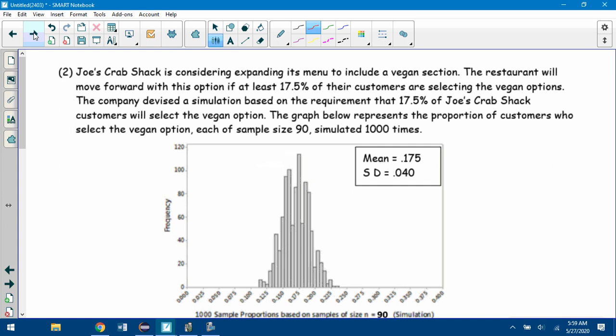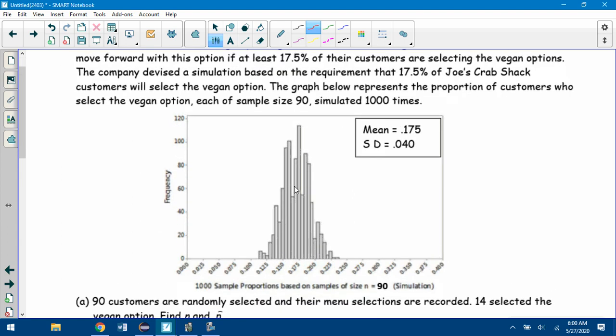The next page is another simulation. Joe's Crab Shack is considering expanding its menu to include a vegan section. The restaurant will move forward with this option if at least 17.5% of their customers are selecting the vegan options. The company devised a simulation based on the requirement that 17.5% of Joe's Crab Shack customers will select the vegan option. The graph below represents the proportion of customers who select the vegan option, each of sample size 90, simulated 1,000 times.